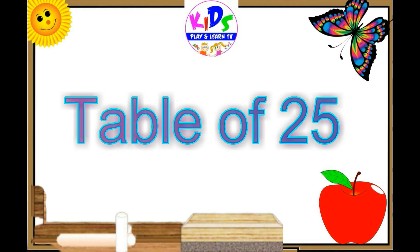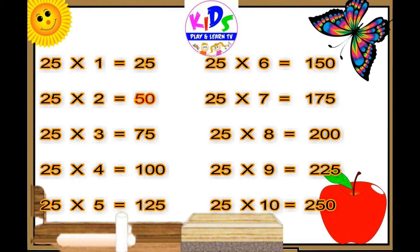Twenty-five ones are twenty-five. Twenty-five twos are fifty. Twenty-five threes are seventy-five. Twenty-five fours are one hundred. Twenty-five fives are one twenty-five. Twenty-five sixes are one fifty.